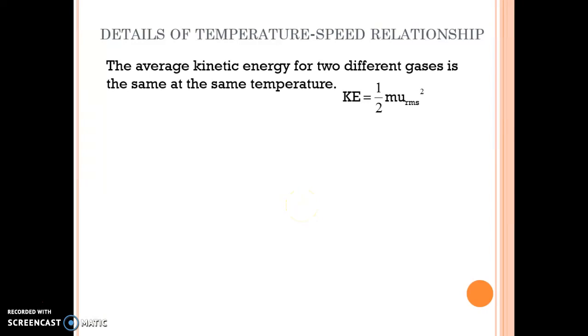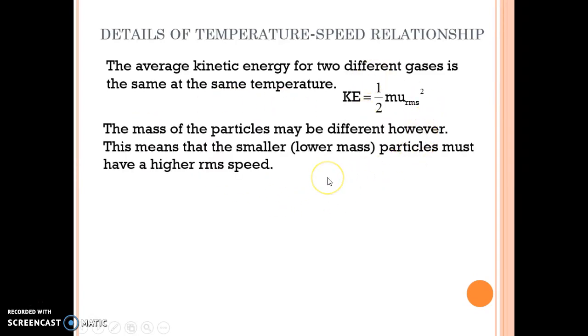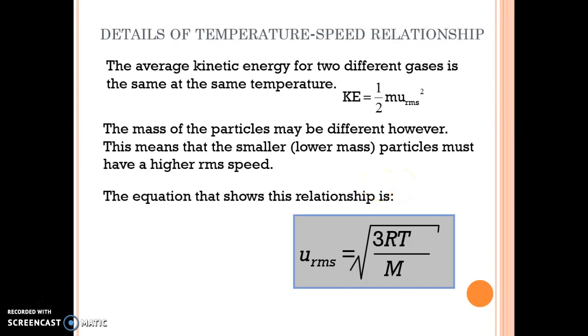So once again, we're going to continue this idea. The average kinetic energy of two different gases is the same at each temperature. But since the mass of the particles are different, that means that the slower particles actually are moving faster.